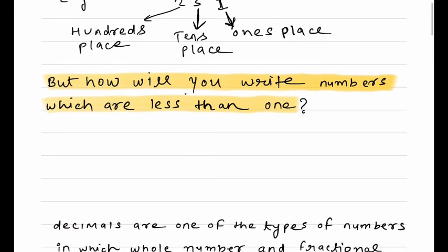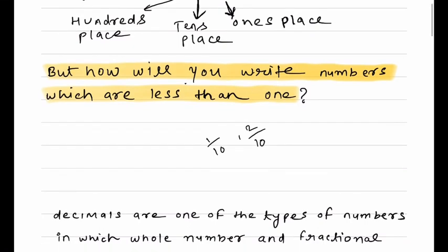So how will you write numbers which are less than 1? This is the main question. Suppose there is one part out of ten parts, or two parts out of ten parts — how will you write that? You cannot write 2, because that means ones place, and you cannot write 22 either. So how will you write that?